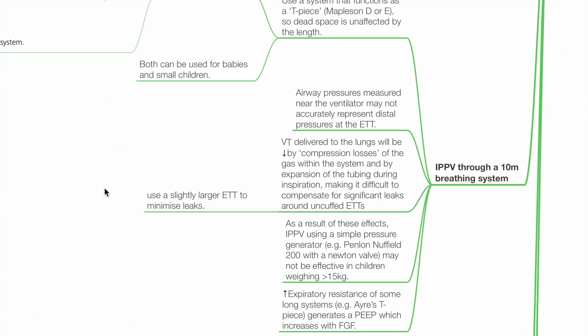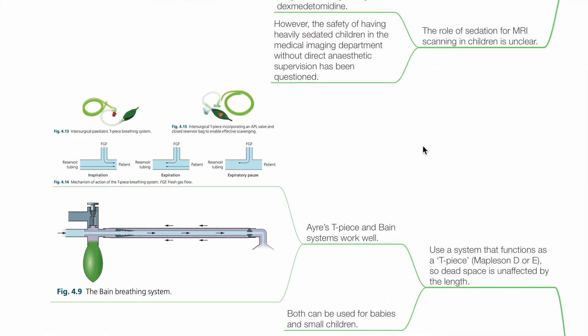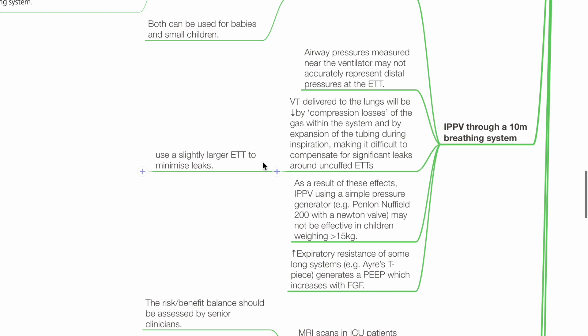IPPV through a 10-metre breathing system: use a system that functions as a T-piece so dead space is unaffected by the length — examples include the Ayre's T-piece and Bain system. Both can be used for babies and small children. Airway pressures measured near the ventilator may not accurately represent distal pressures at the ETT. Tidal volume delivered to the lungs will be reduced by compression losses and expansion of tubing during inspiration. This makes it difficult to compensate for significant leaks around uncuffed ETTs — use a slightly larger ETT to minimize air leaks.